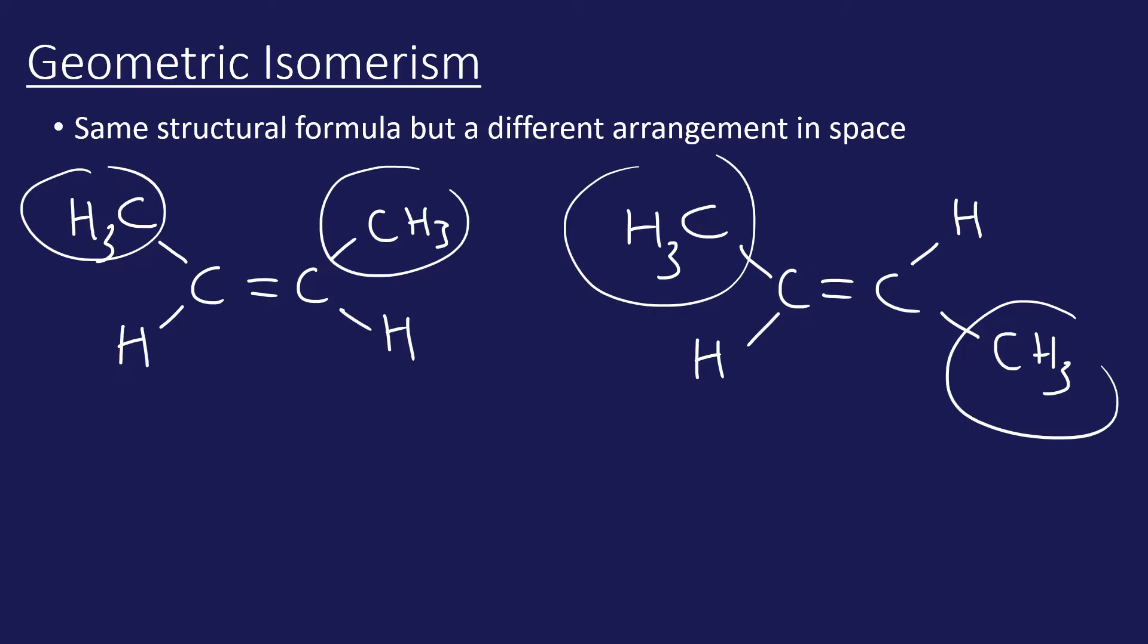They have the same structural formula, which in this case is CH3-CH=CH-CH3. If I do the structural formula of the one on the right, it's exactly the same: CH3-CH=CH-CH3. But they are definitely not the same thing. If we were to make these with molecular models, they are non-superimposable; they have a different arrangement in space.